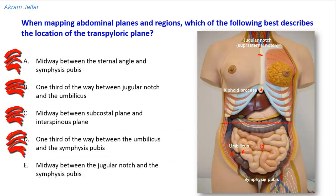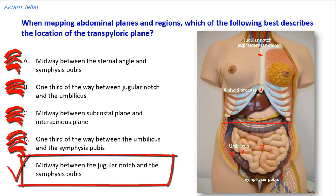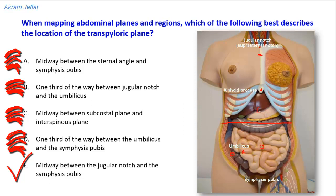The correct answer is option E: midway between the jugular notch and the symphysis pubis. The transpyloric plane lies at the level of the L1 vertebra. Structures located at the transpyloric plane include: the lower end of the spinal cord, which ends at the lower border of L1 between L1 and L2; the origin of the superior mesenteric artery from the aorta at L1; and the union of the superior mesenteric vein and the splenic vein to form the portal vein, behind the neck of the pancreas.